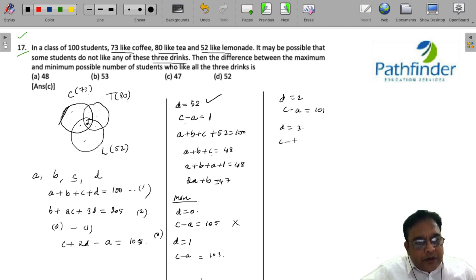D is equal to 3, then C minus A is 99. Is that possible? We will need to check. So, if you check for C minus A as 99, we also have A plus B plus C plus D as 100, which means A plus B plus C, the maximum value can only be 97. Which means in under no circumstance can C minus A be equal to 99. So, this is not possible. You will see that taking D is equal to 4 will also have a similar result.